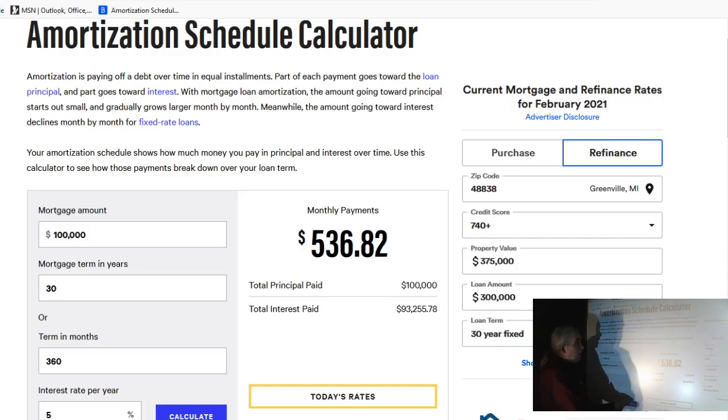When I hit calculate, it tells me what my monthly payments are. And everybody thinks, well that's all I need to know, but there's much more that you can do with this. So let's hit calculate the whole thing and then we're going to say show amortization schedule. And when you do that,